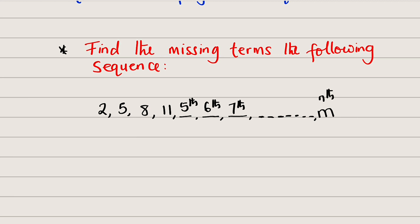Now let us work out a solution. If you recall from our previous lesson, a linear sequence or arithmetic sequence has a constant common difference. That constant common difference is the number you add to a term to obtain the subsequent term. For instance, 2 plus d gives us the subsequent term which is 5. So d equals 5 minus 2, and d is equal to 3.